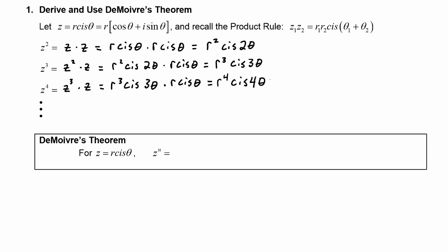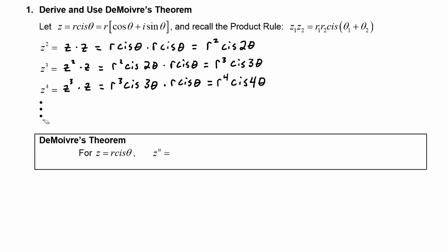Now let's notice the pattern: z squared became r squared cis two theta, z to the third became r to the third cis three theta, and z to the fourth became r to the fourth cis four theta. Extrapolating from this pattern, z to the n is going to be r to the n cis n theta. This is De Moivre's Theorem, and it gives us a simple way to take powers of complex numbers.